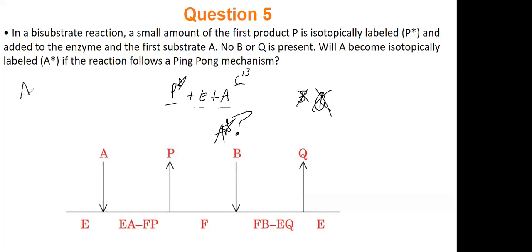Alright, so the majority of us said A will be labeled, so let's take a look at this logic. If I start with E, A, E, and P, so I start with A, E, and P in a test tube, and P is labeled, what can happen is that E, A can bind with our enzyme, and they'll make F an unlabeled product.